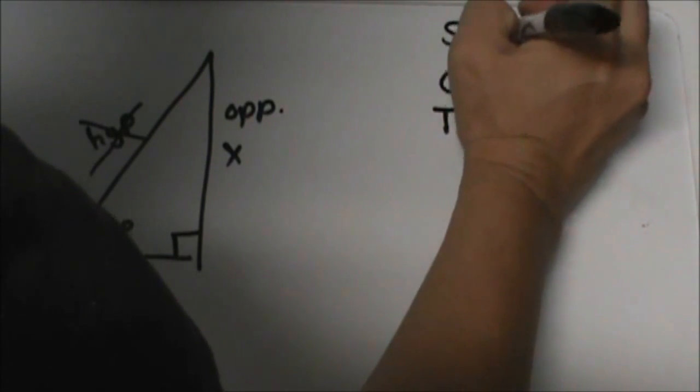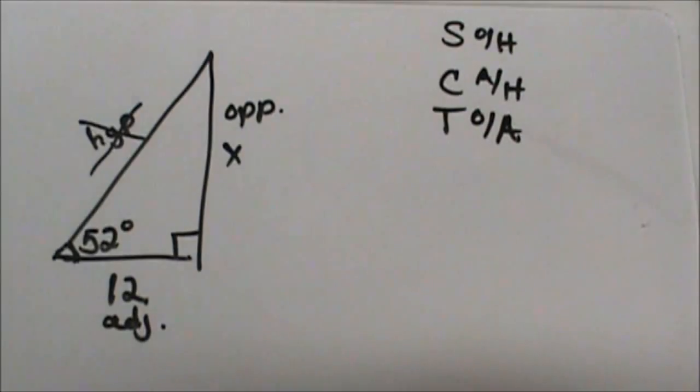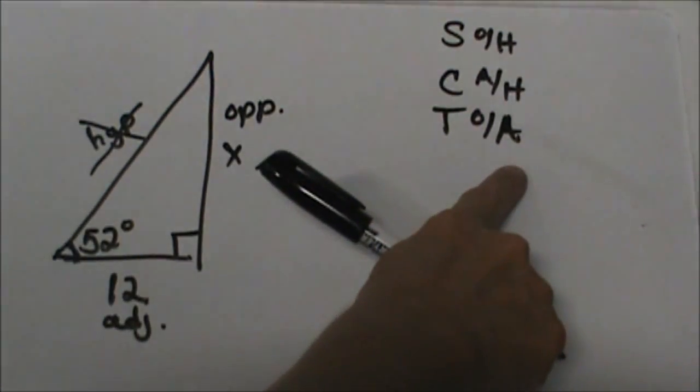Opposite, hypotenuse; adjacent, hypotenuse; opposite, adjacent. Which one uses the opposite side and the adjacent side? Well that's our tangent. So that's how we decide which trig function to use.